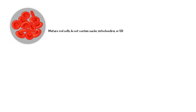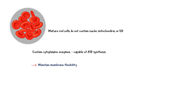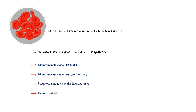Mature red cells do not contain nuclei, mitochondria, or an endoplasmic reticulum. However, they contain cytoplasmic enzymes that are capable of synthesizing ATP. These enzymes also maintain the membrane flexibility of red cells, maintain transport of ions through the red cell membrane, keep the iron and hemoglobin in the ferrous form, and prevent oxidation of red cell proteins.